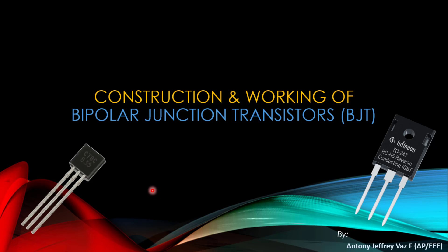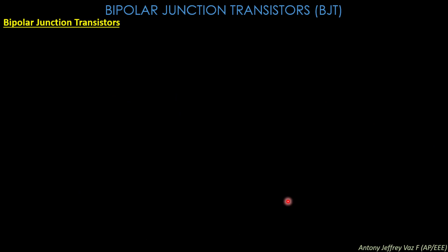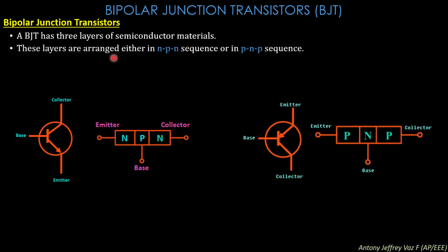The physical part view of a transistor will look like this. A BJT has 3 layers of semiconductor material, whereas a diode is a 2-layer semiconductor material. In a transistor, the 3 layers are arranged either in NPN sequence or in PNP sequence.